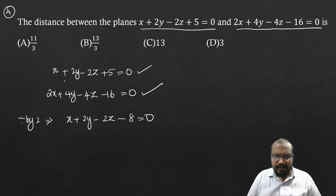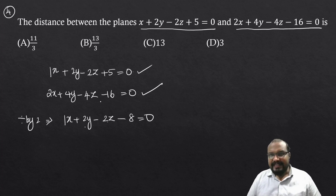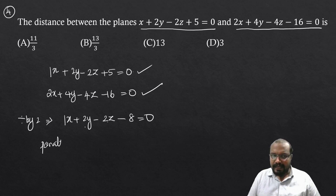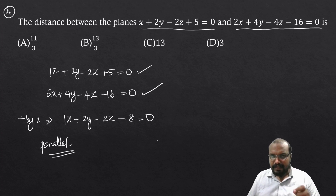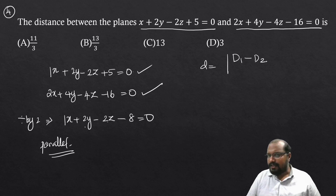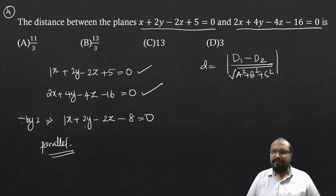The direction ratios of both planes are the same (1, 2, -2), so the planes are parallel. For parallel planes, the distance formula is D = |d1 - d2| divided by the square root of (A² + B² + C²).